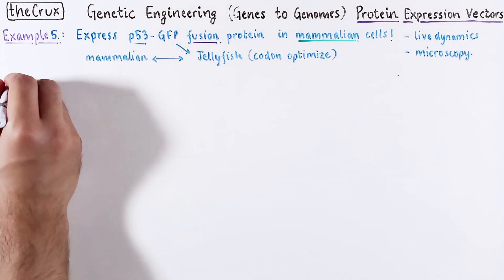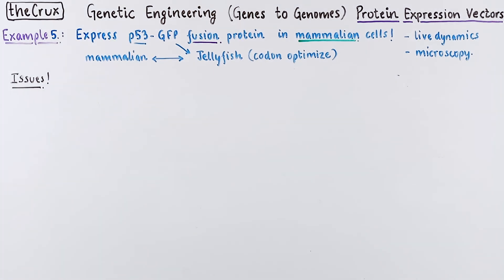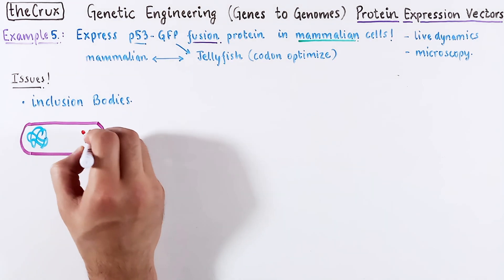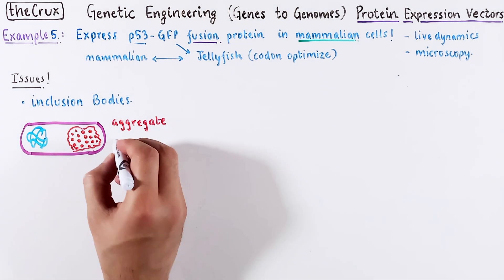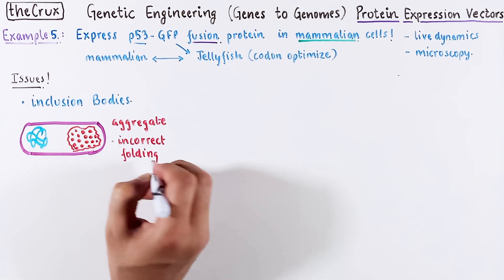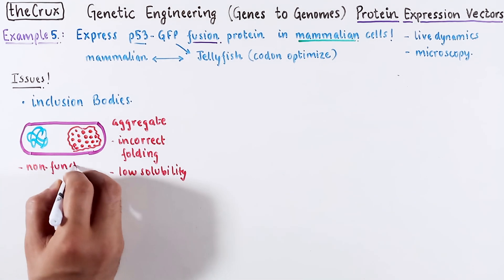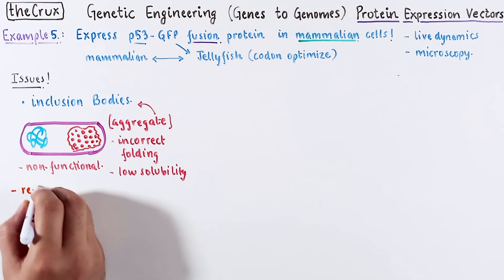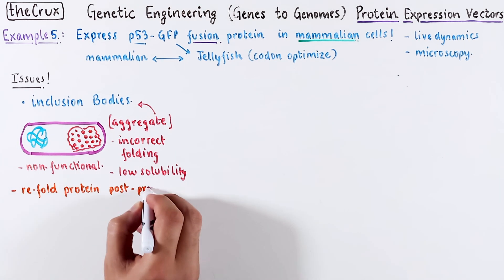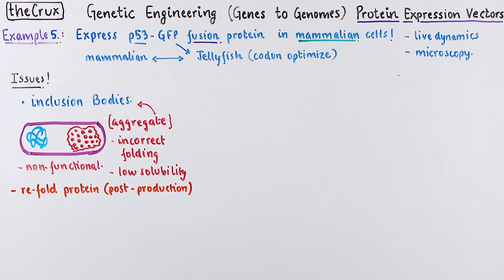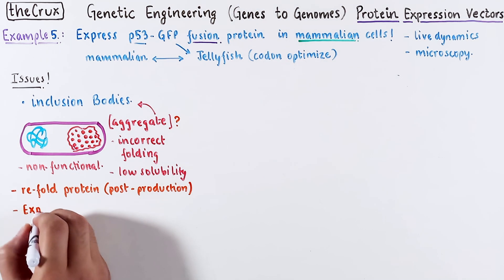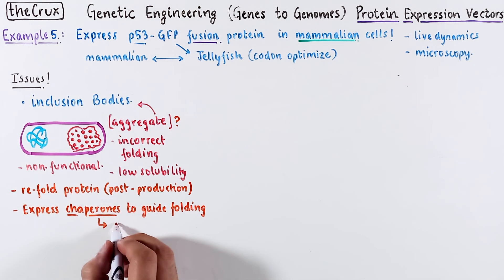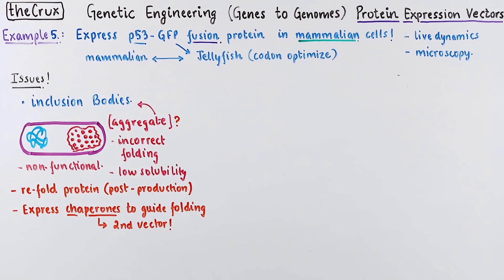Regardless of how awesome your protein is, you are likely to run into issues. A big issue common to bacterial host is inclusion bodies. These are aggregates of your protein that fail to solubilize, or sometimes your protein doesn't even fold properly, and then it aggregates. Aggregates often lead to inactive proteins, and you could extract protein from inclusion bodies and try to refold the protein later, but that doesn't always work, and it is inefficient. One solution is to express helper proteins, like chaperones, to assist in proper folding, which means you need to have a second expression system for chaperones.